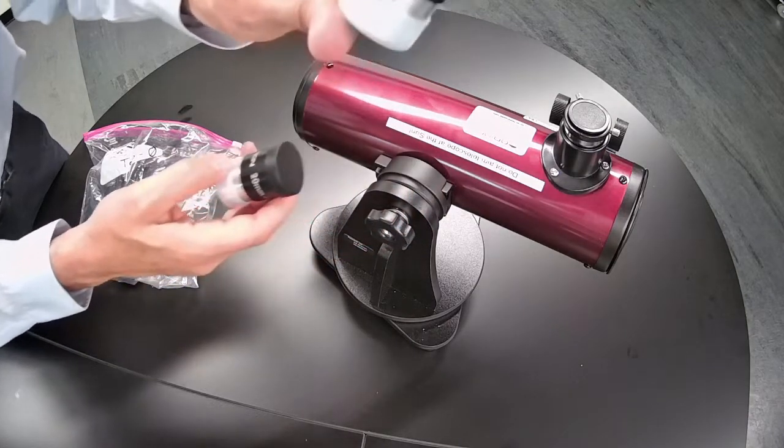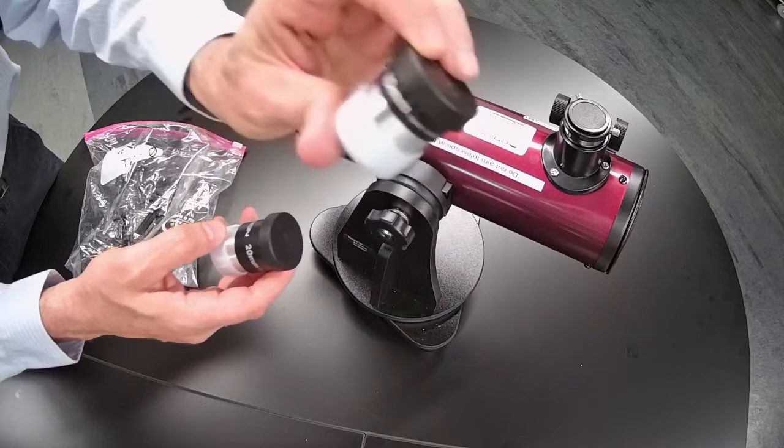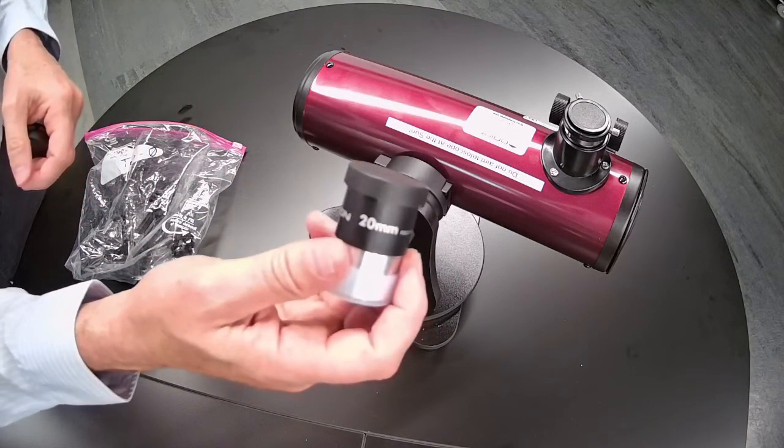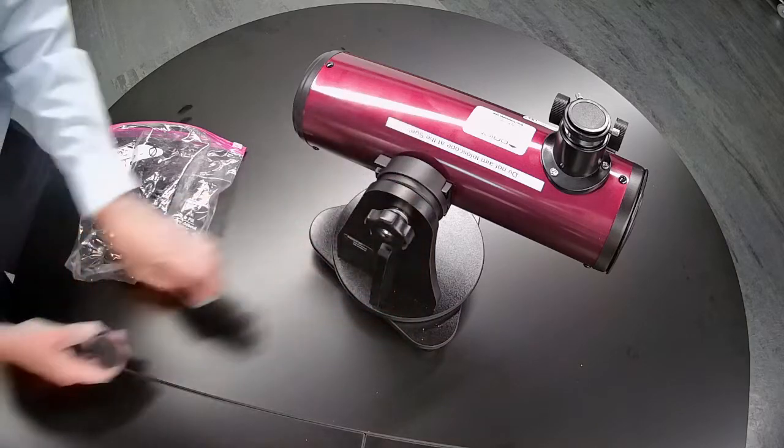So the 10 millimeter is going to give you a higher magnification but it's a smaller field of view on the sky. 20 millimeter lower magnification but bigger field of view on the sky.